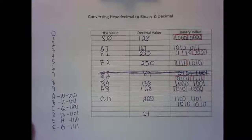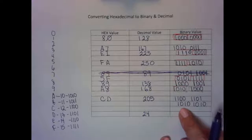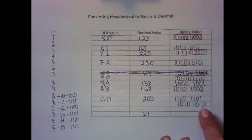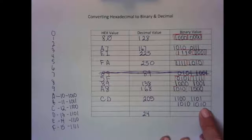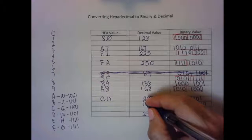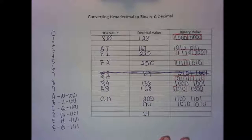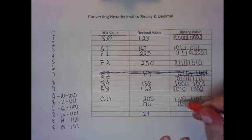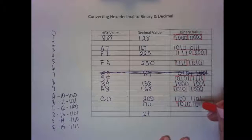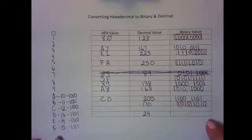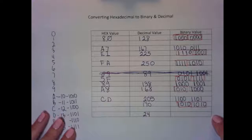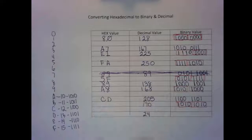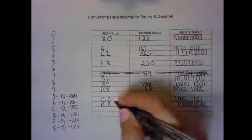Now we want to convert the binary value 10101010. This happens to be 170. The decimal value is 170 because this is 160 plus 10. Looking at the individual hex tets to figure out the hex value: 1010 is a hex value of A, and 1010 is also A. So we have AA — a nice easy one.